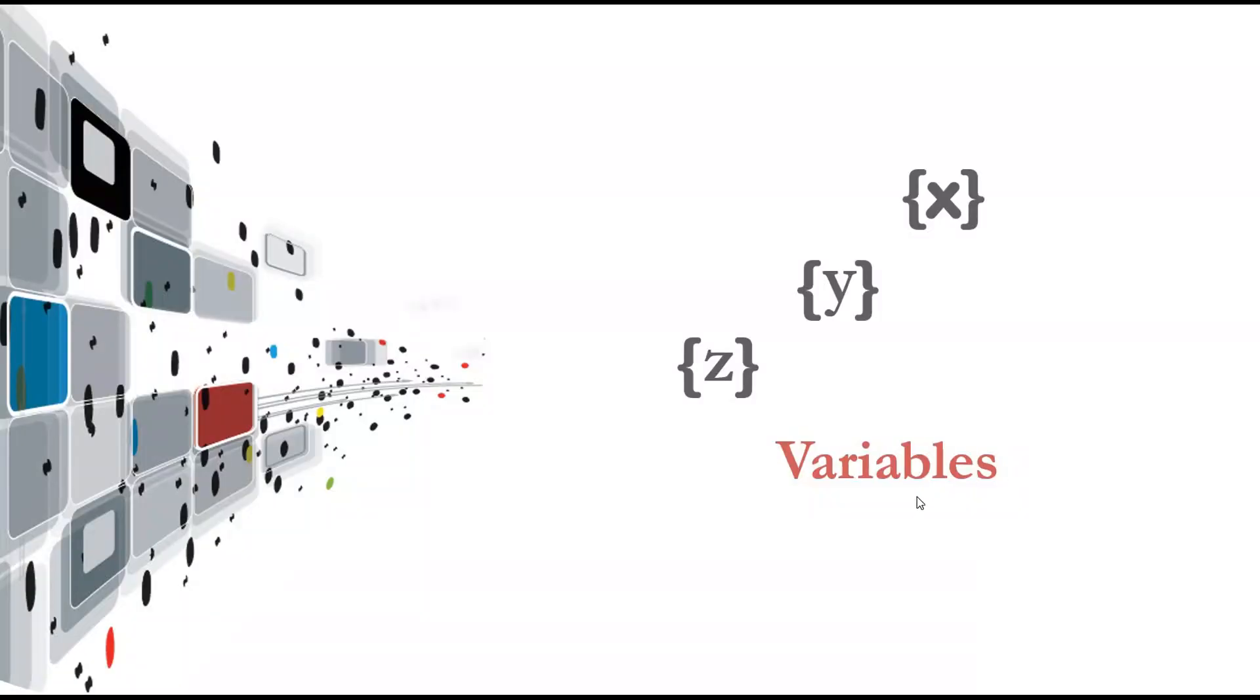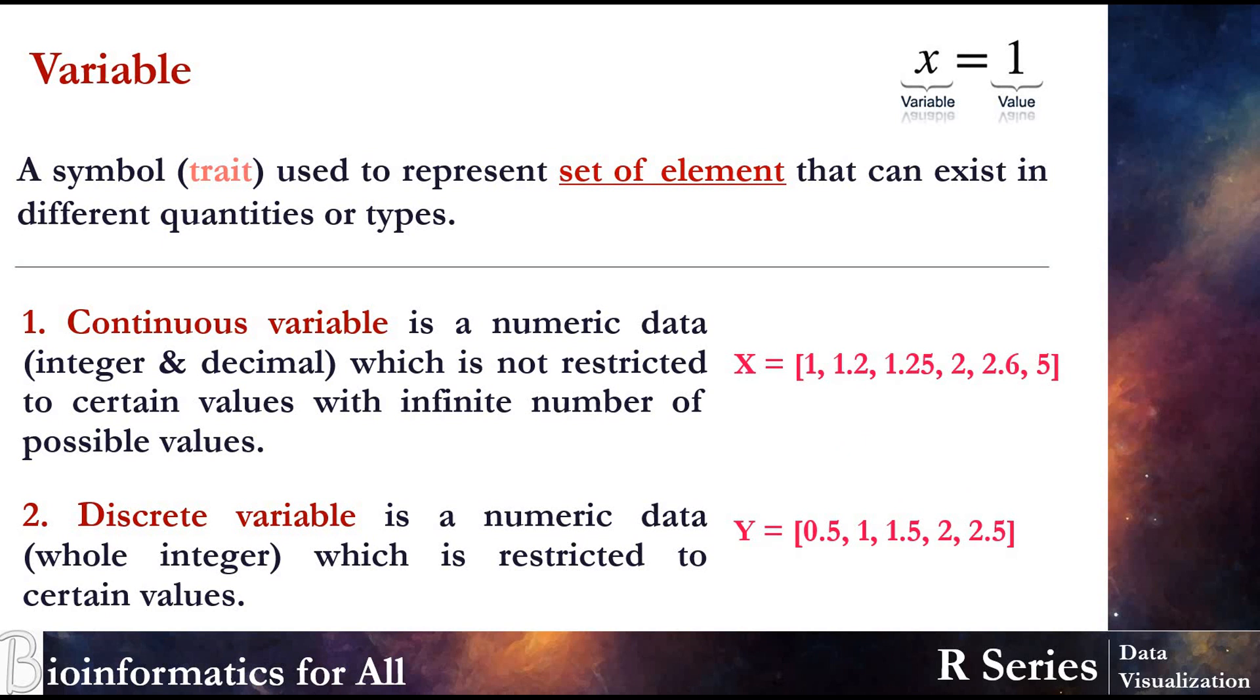So let's start with variables. What is a variable? A variable is a symbol used to represent a set of elements that can exist in different quantities or types. It has two types: continuous and discrete. Continuous variable is numeric data - it can be integer or decimal and it's not restricted to certain values, so it can be 1, 1.25, 2, 2.6. But in discrete variable, it's still numeric data but it's restricted to certain values. So we can see here 0.5, 1, 1.5 is restricted - it can't be 1.56 or 1.6.